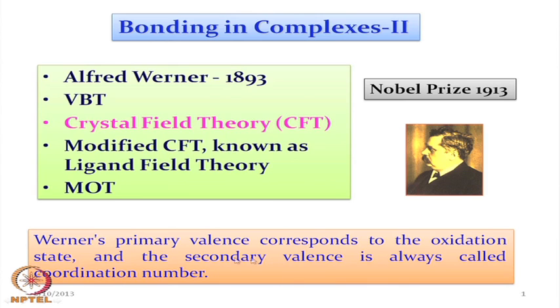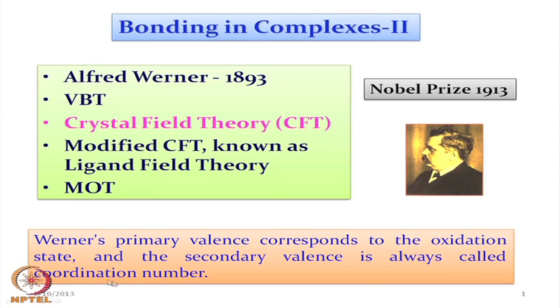This secondary valence can be correlated to the coordination number. When it is fulfilled by the metal center, we find that certain metal centers can have a coordination number of two, and in some other cases the coordination number can go to three or can go to six. Depending upon the number of coordination, we can have the corresponding geometry, and the valence structure of the metal center can give some propositions as we have seen in our previous class.